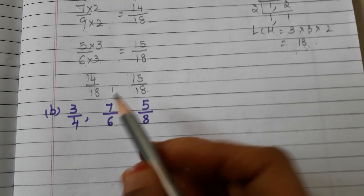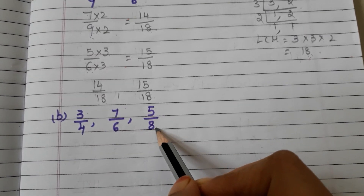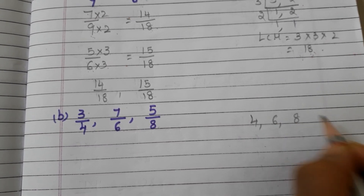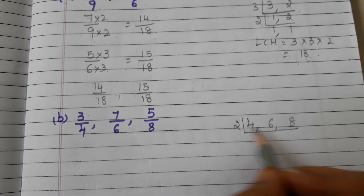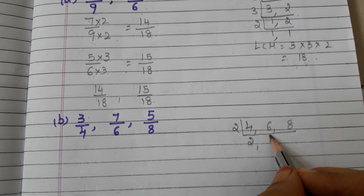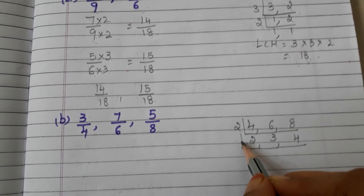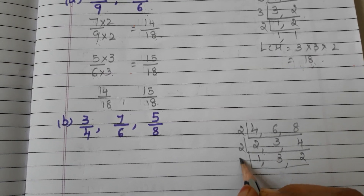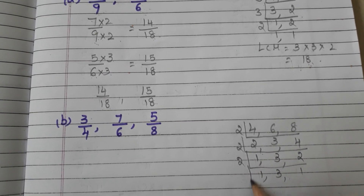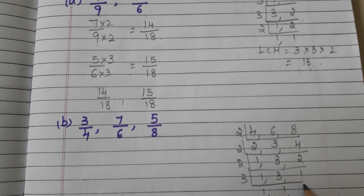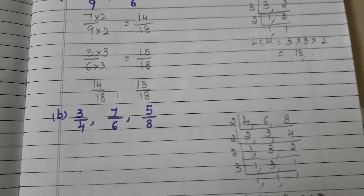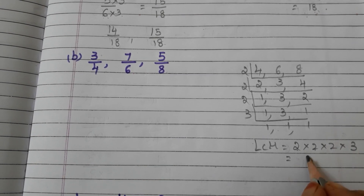Let us go to another example. Here we have 3 by 4, 7 by 6, and 5 by 8. Take the denominators: 4, 6, and 8, and find the LCM. Here we can take 2: 2 twos are 4, 2 threes are 6, 2 fours are 8. Again 2: 1, 3, 2. Now 2: 1, 3, 1. LCM equals 2 into 2 into 2 into 3. 2 twos are 4, 4 twos are 8, 8 threes are 24.